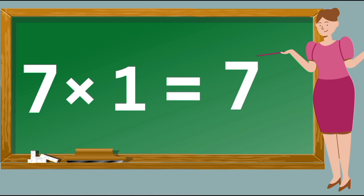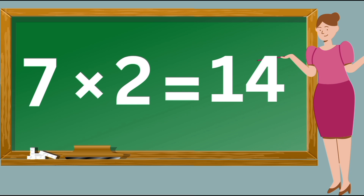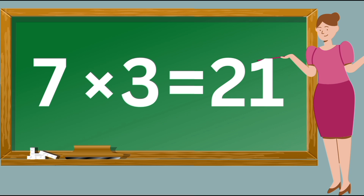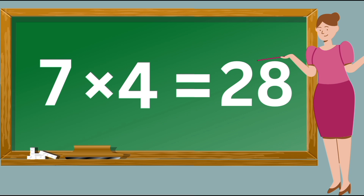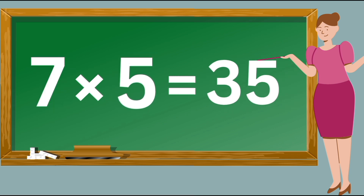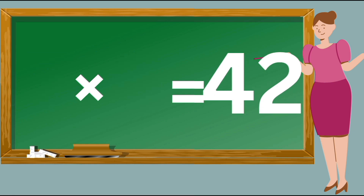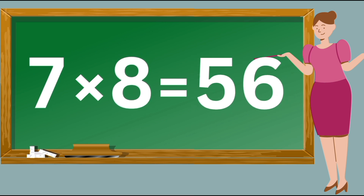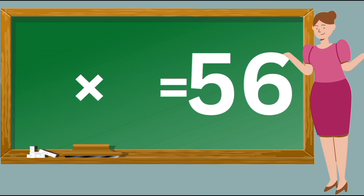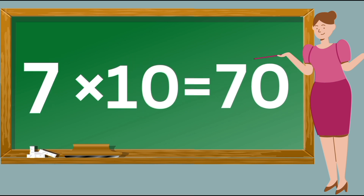7×1 is 7. 7×2 is 14. 7×3 is 21. 7×4 is 28. 7×5 is 35. 7×6 is 42. 7×7 is 49. 7×8 is 56. 7×9 is 63. 7×10 is 70.